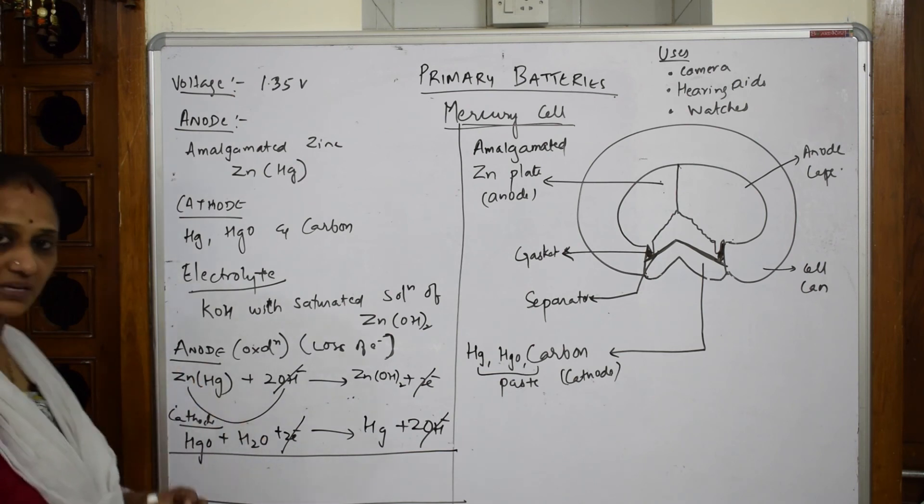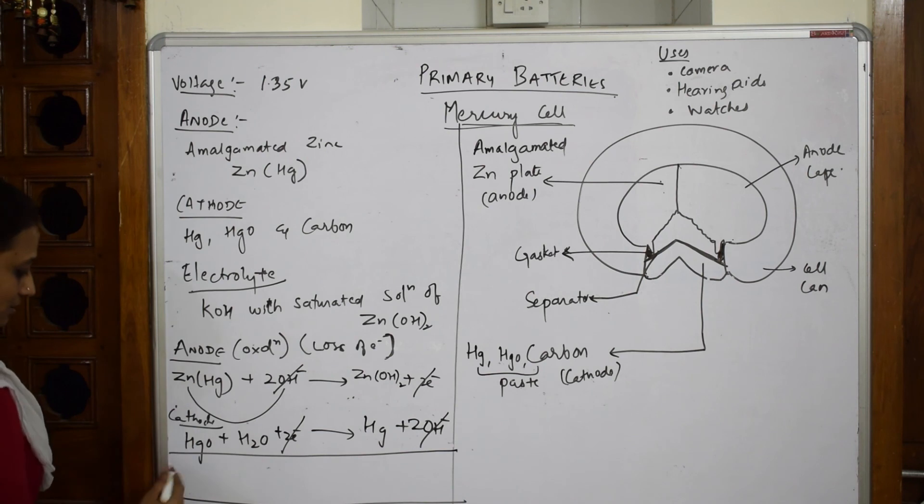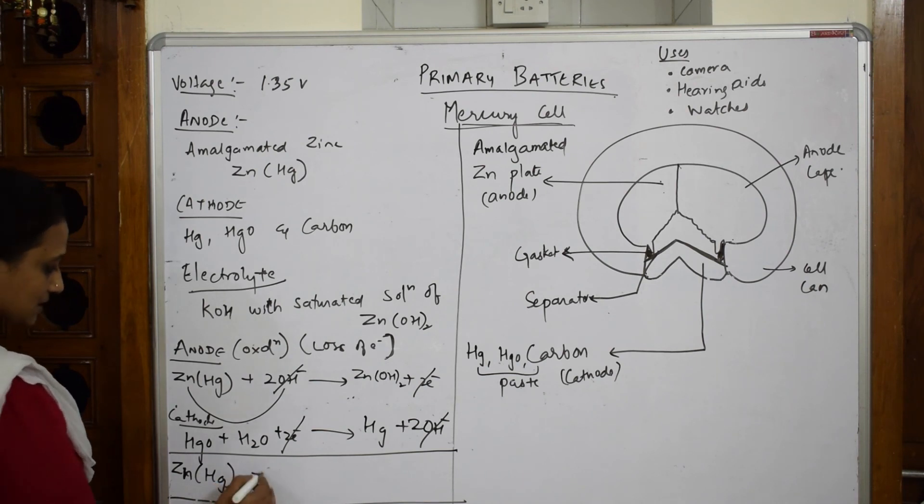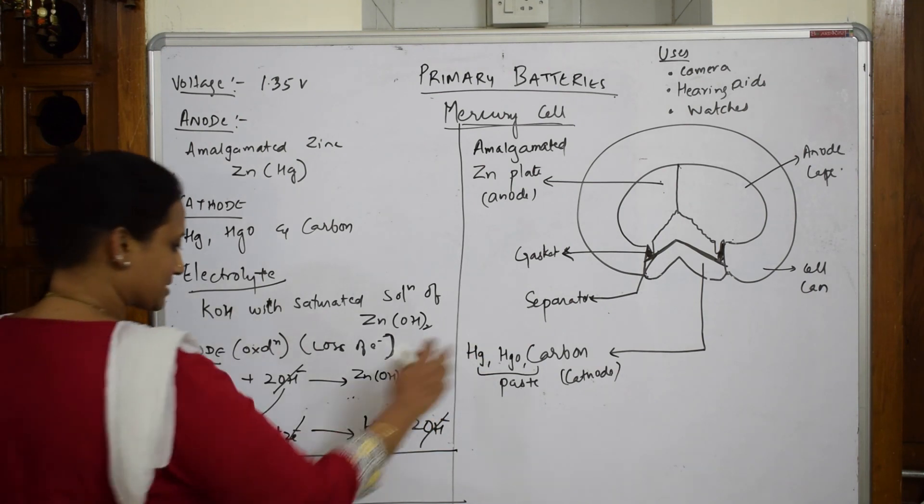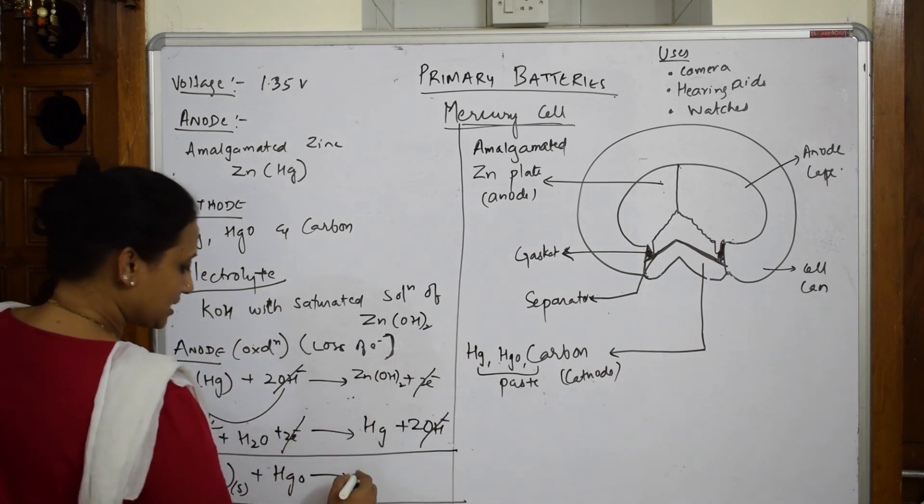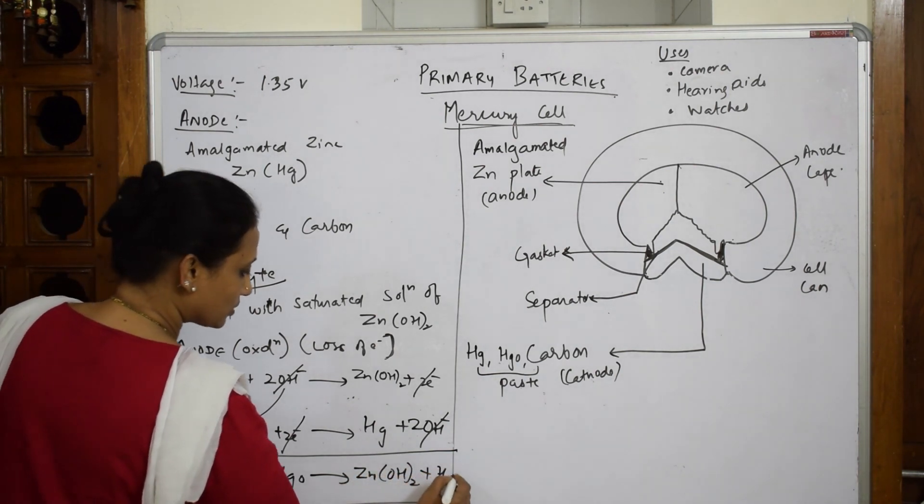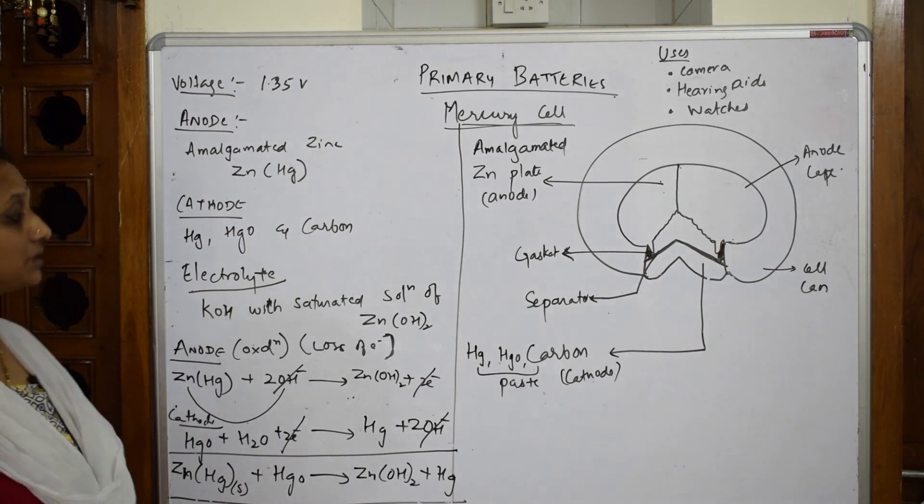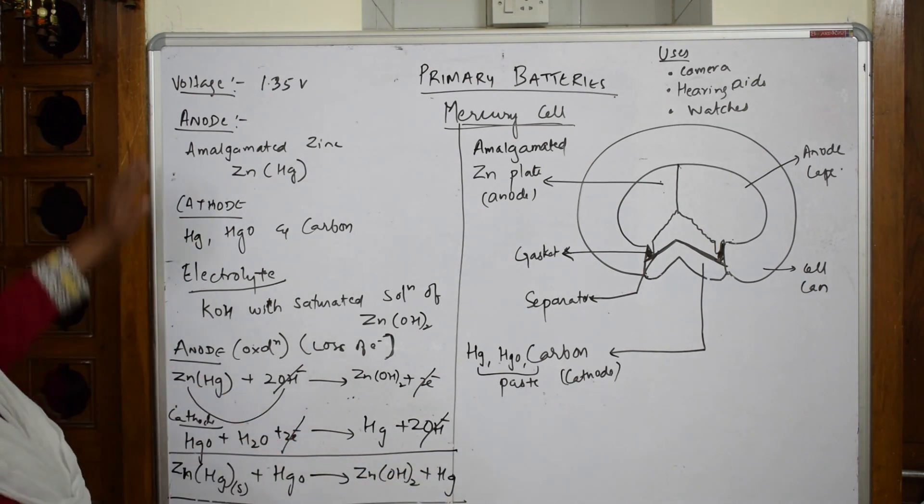Water is part of the paste, not required to write in the reaction. Start from here: zinc amalgam solid plus mercury oxide HgO - not required to write water because it's in form of a paste - gives us zinc hydroxide and mercury is out. This is your mercury cell, release of mercury which is regenerated.